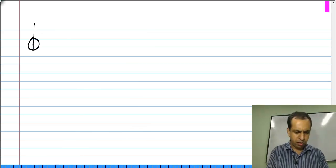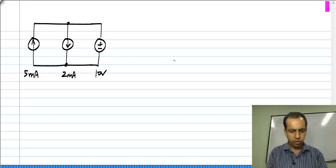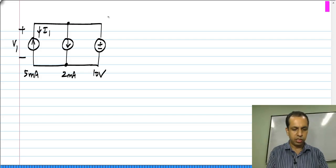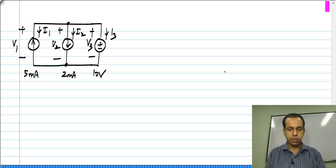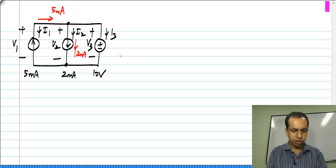Consider a simple example: a 5 milliamp current source in one direction in parallel with a 2 milliamp current source in the downward direction, both connected to a 10 volt voltage source. We formally define V_1, I_1, V_2, I_2, and V_3, I_3 for each element. By Kirchhoff's current law, the 5 milliamp and 2 milliamp sources together mean 3 milliamps flows through the voltage source.